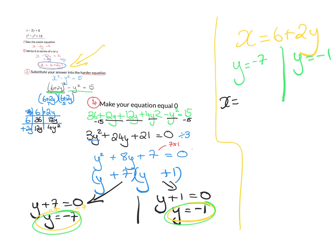So x would be equal to 6 plus 2 times minus 7. x equals 6 minus 14. x equals minus 8. And then x equals 6 plus 2 times minus 1 here, because I'm obviously letting y equal minus 1. x equals 6 minus 2. x equals 4.